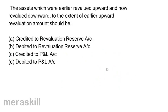Assets which were earlier revalued upward and are now revalued downward — to the extent of the earlier upward revaluation amount — should be: A. Credited to revaluation reserve, B. Debited to revaluation reserve, C. Credited to profit and loss account, D. Debited to profit and loss account. Since they are now revalued downward, the revaluation reserve is reduced. Correct answer: B, debited to revaluation reserve.